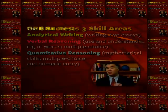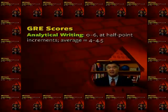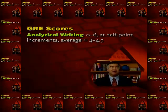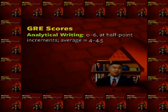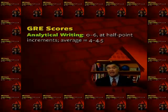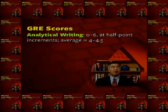You'll be given three scores on the GRE corresponding to those three skill areas. On analytical writing, you'll receive a score ranging between 0 and 6, with the scores varying at half-point increments — scores like 2, 2.5, 3, 3.5, and so on. An average score on the analytical writing test is likely to be somewhere between 4 and 4.5.